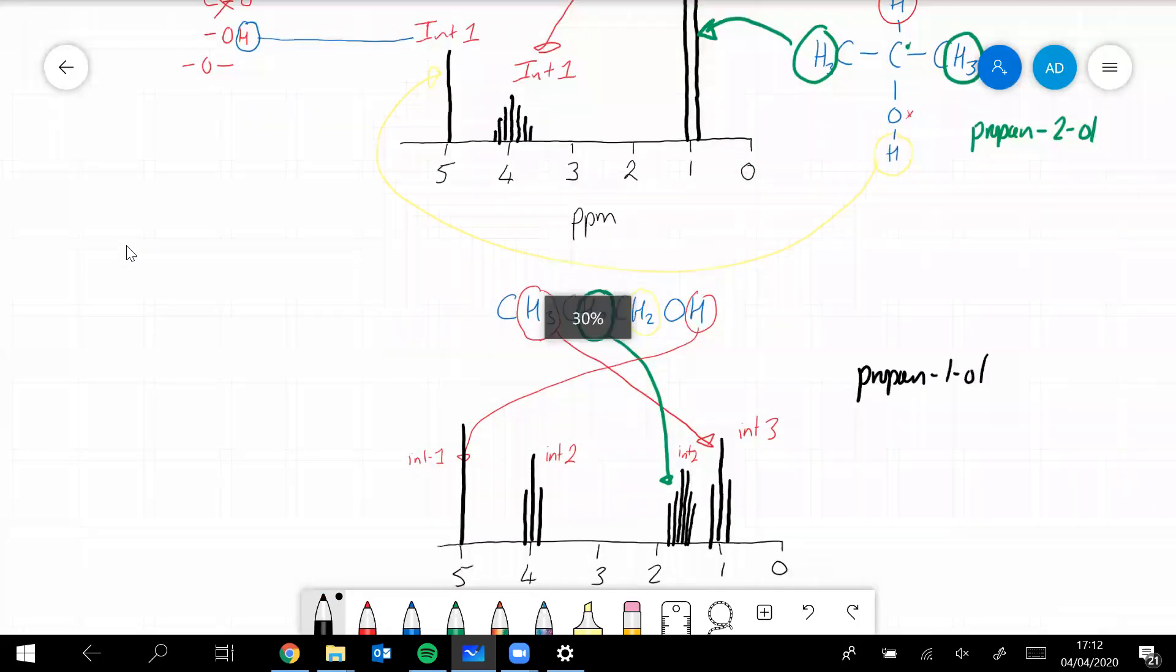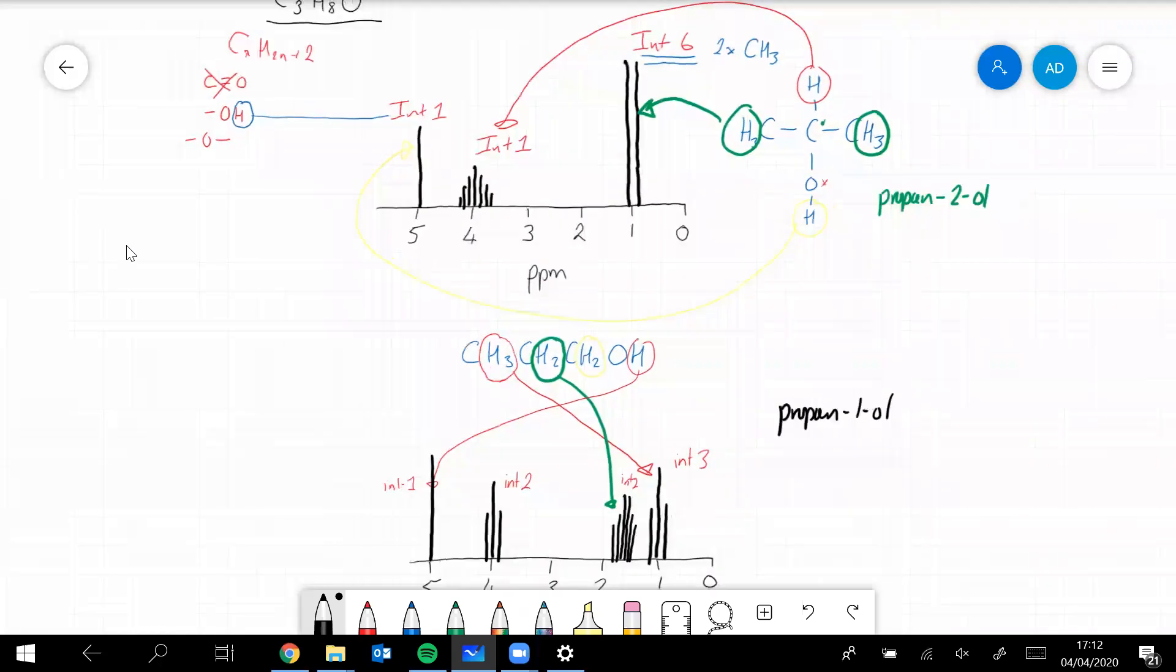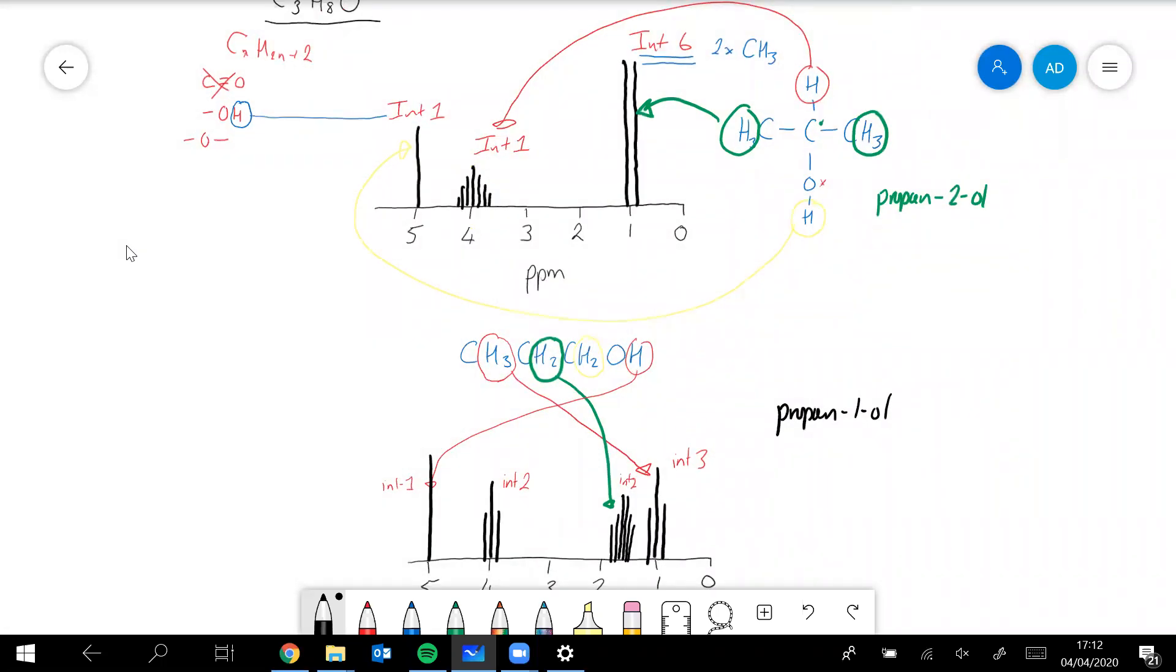If you looked at the infrared spectrum of propan-2-ol and propan-1-ol, they'd be more or less identical. You wouldn't be able to really tell them apart, so here straight away the spectra look very different.